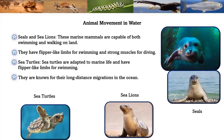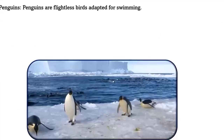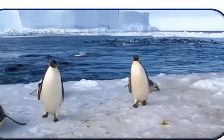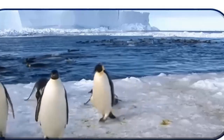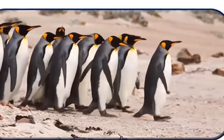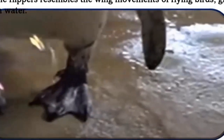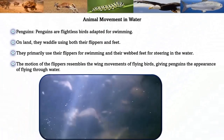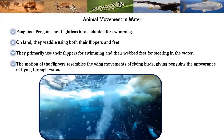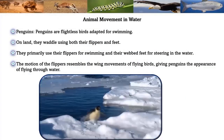Sea turtles are known for long-distance migration in the oceans. Penguins are flightless birds adapted for swimming. On land they waddle using both their flippers and feet, but they primarily use their flippers — modified wings — for swimming and their webbed feet for steering in water. The motion of their flippers resembles the wing movement of flying birds, giving penguins the appearance of flying through water.